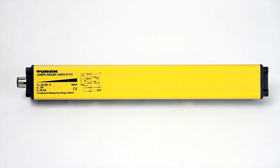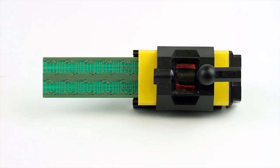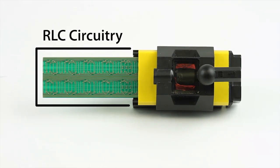One linear inductive measurement technology uses the RLC resistance inductance capacitance principle to give more accurate and faster position feedback than ever before. This RL circuitry makes use of emitter and receiver coils on a printed circuit board.